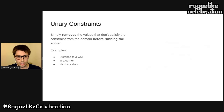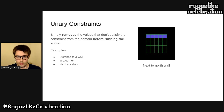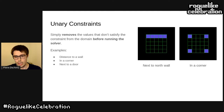Now let's look at some constraints. First, unary constraints, which are the simplest because they deal with only one variable. The strategy is to remove values that don't satisfy the constraint from the domain before running the solver. For example, if we want to place an object next to the north wall, we keep only the positions in the first row. If we want it in a corner, we keep only the four corner positions.